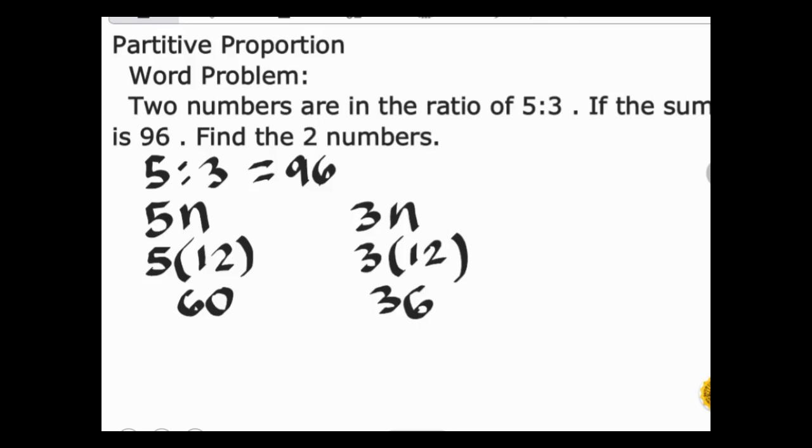For the second number, we have 3 times n. Write 3, then substitute the value of n which is 12. So 3 times 12 is 36. The two numbers we're looking for are 60 and 36.